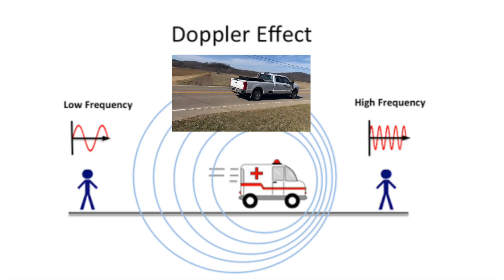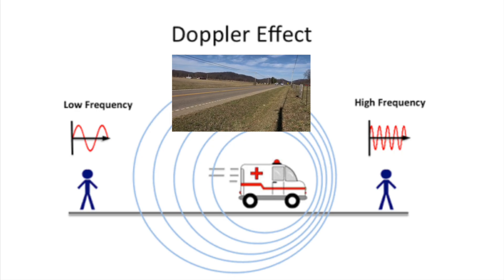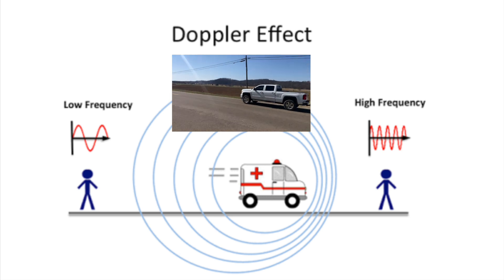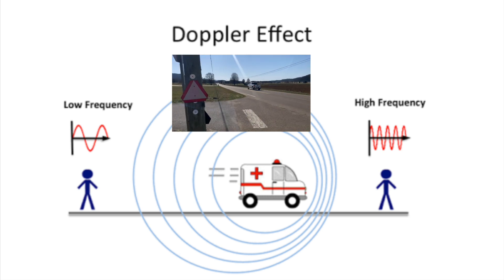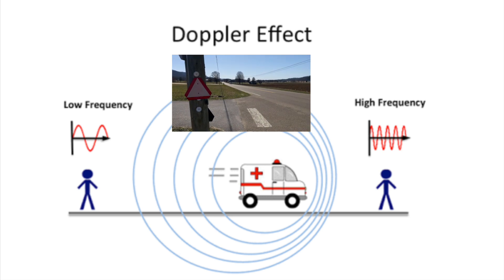As the vehicle moves towards you, the sound waves get compressed or squeezed together, so their frequency increases and the sound is relatively high in pitch. And then when the vehicle passes you and moves away, the waves are stretched or spread out, so the frequency decreases and the resulting sound is at a lower pitch.